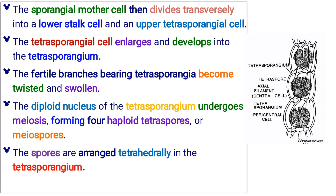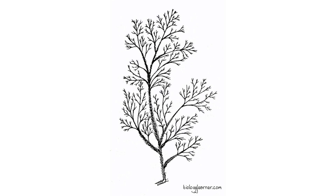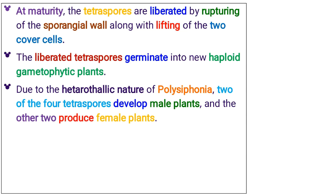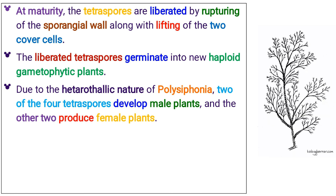The spores are arranged tetrahedrally in the tetrasporangium. At maturity, the tetraspores are liberated by rupturing of the sporangial wall, along with lifting of the two cover cells. The liberated tetraspores germinate into new haploid gametophytic plants. Due to the heterothalic nature of Polysiphonia, two of the four tetraspores develop male plants and the other two produce female plants.